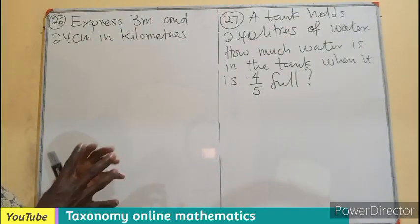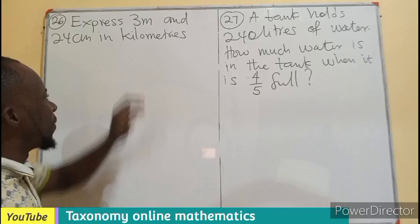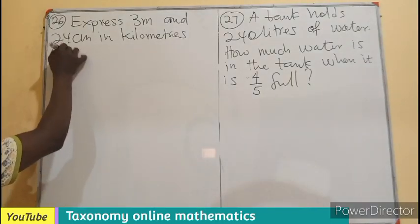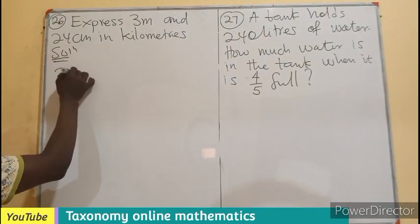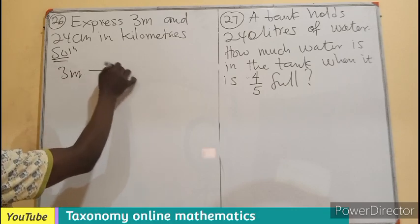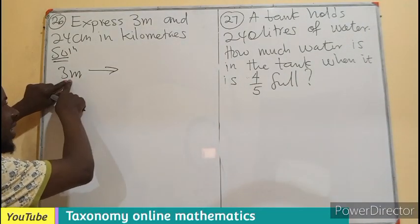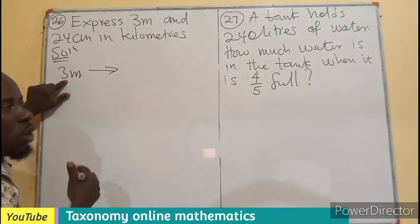Question 26 asks us to express 3 meters and 24 centimeters in kilometers. We are looking for a common unit which is kilometers. We first have to convert 3 meters into kilometers.